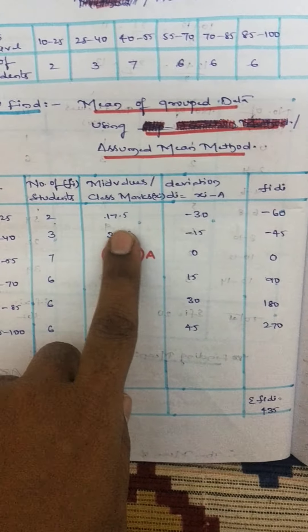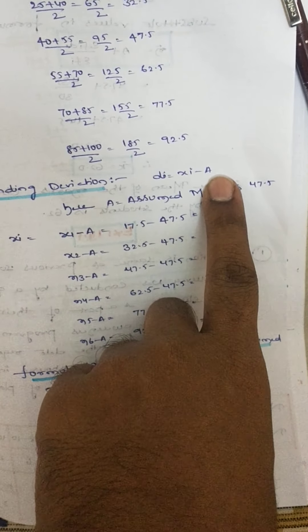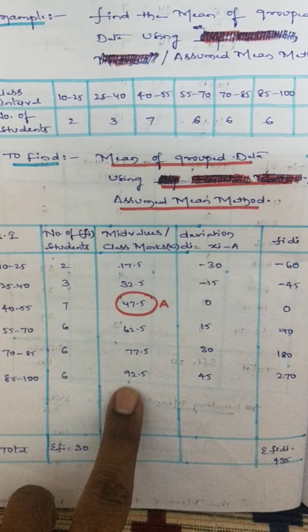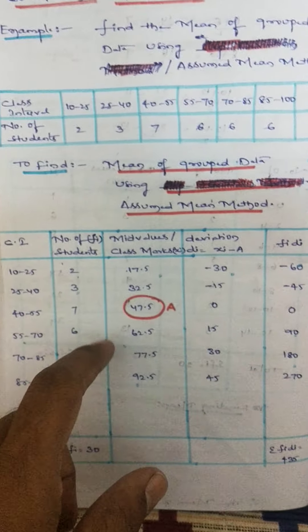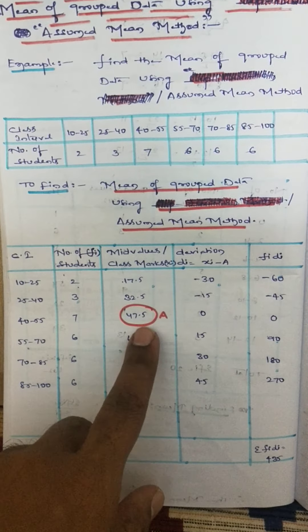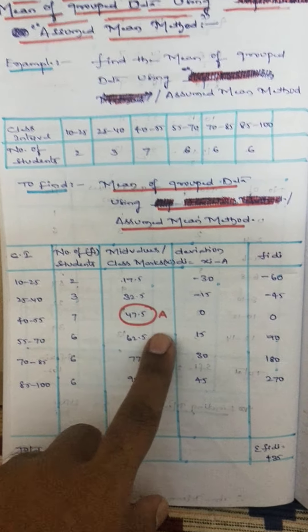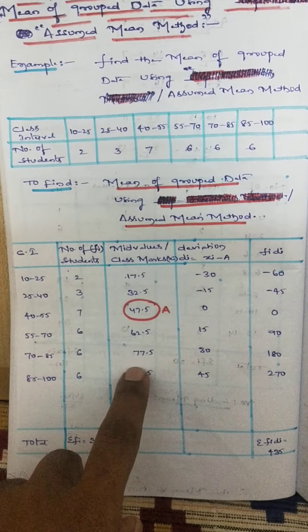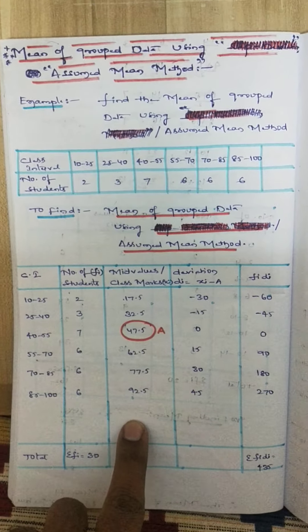If you take the first value 17.5 as A, then it becomes A equals 17.5. It's up to you, you can take any value as A here. You try that method after seeing this video. Instead of taking 47.5 as A, try other values whether you are getting the same answer or not, the same result or not.